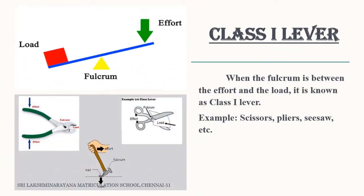Let's see about class 1 lever. When the fulcrum is present in between the effort and the load, it is known as first class lever. Examples are scissors, pliers, seesaw. In this picture of scissor, you can see fulcrum is fixed at the center, load at one side and the effort at the other side.